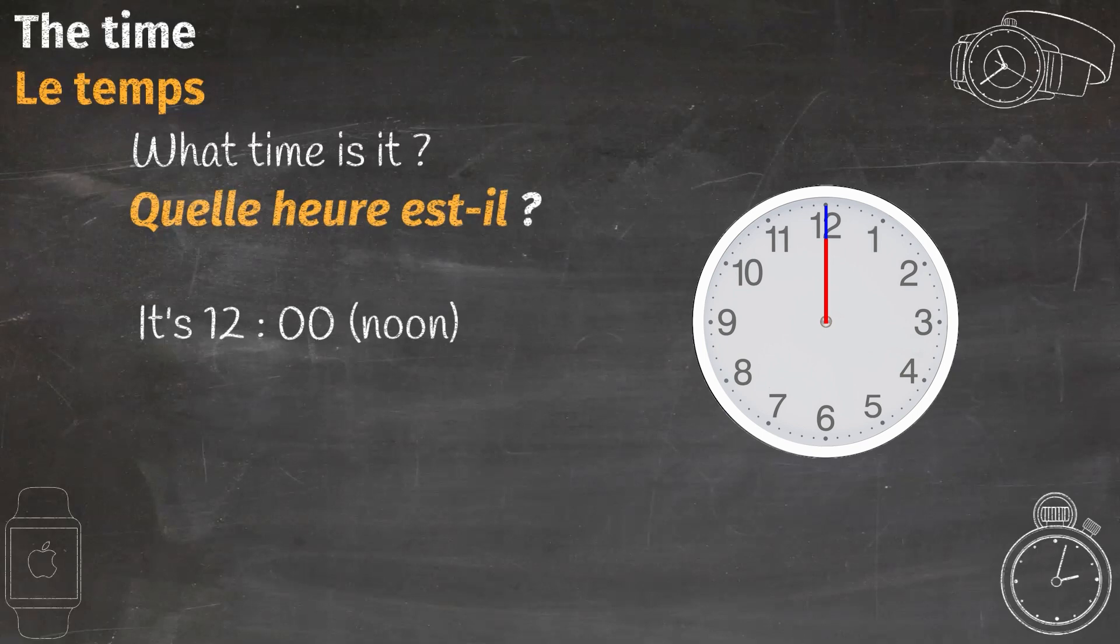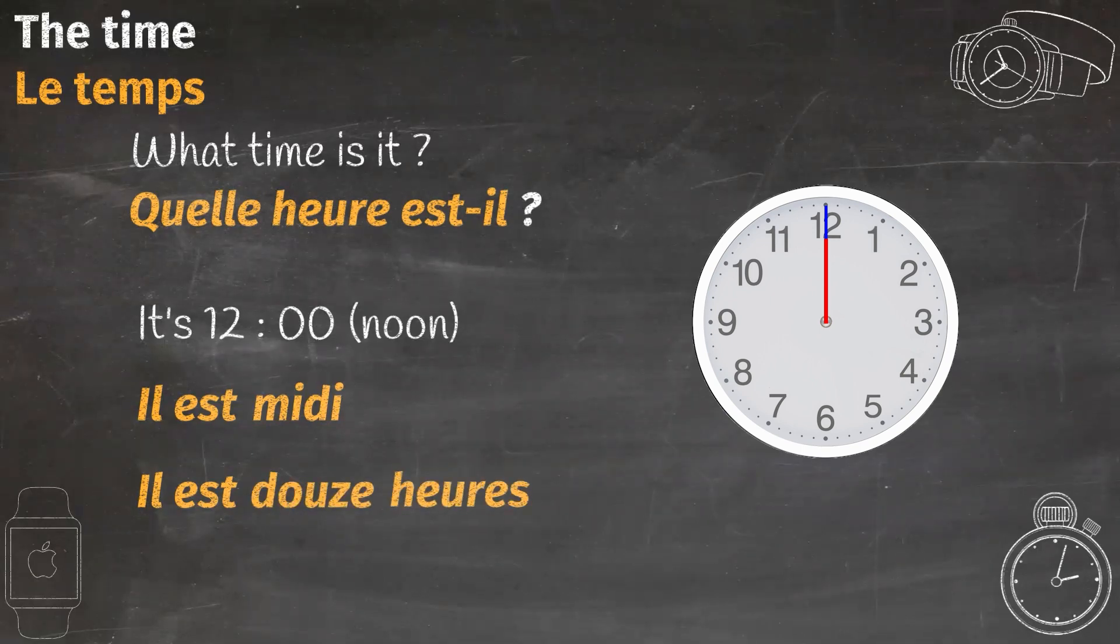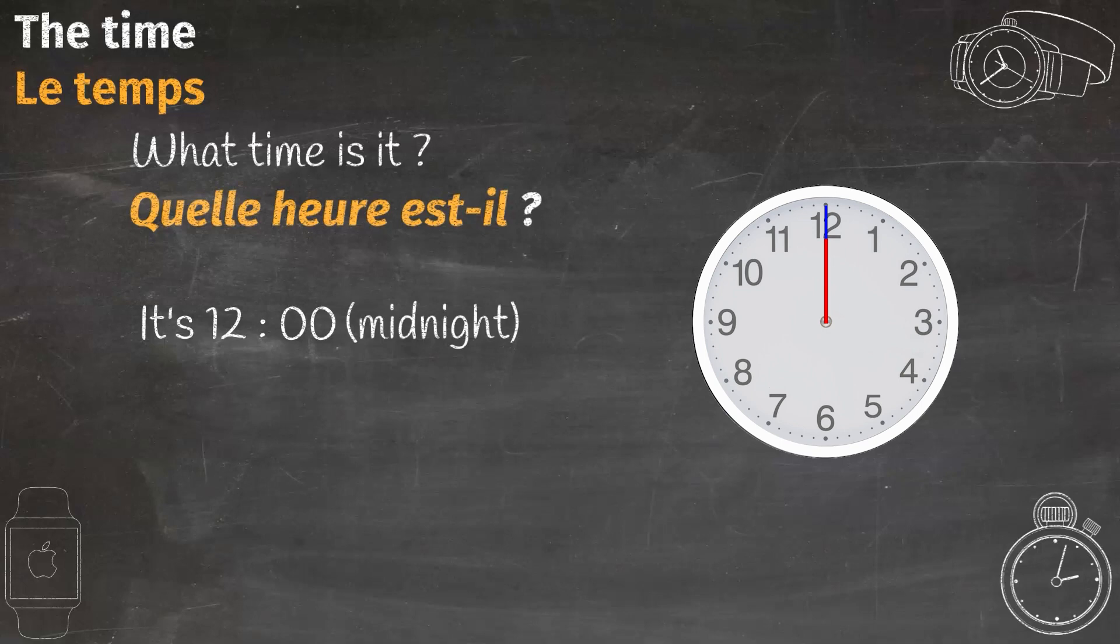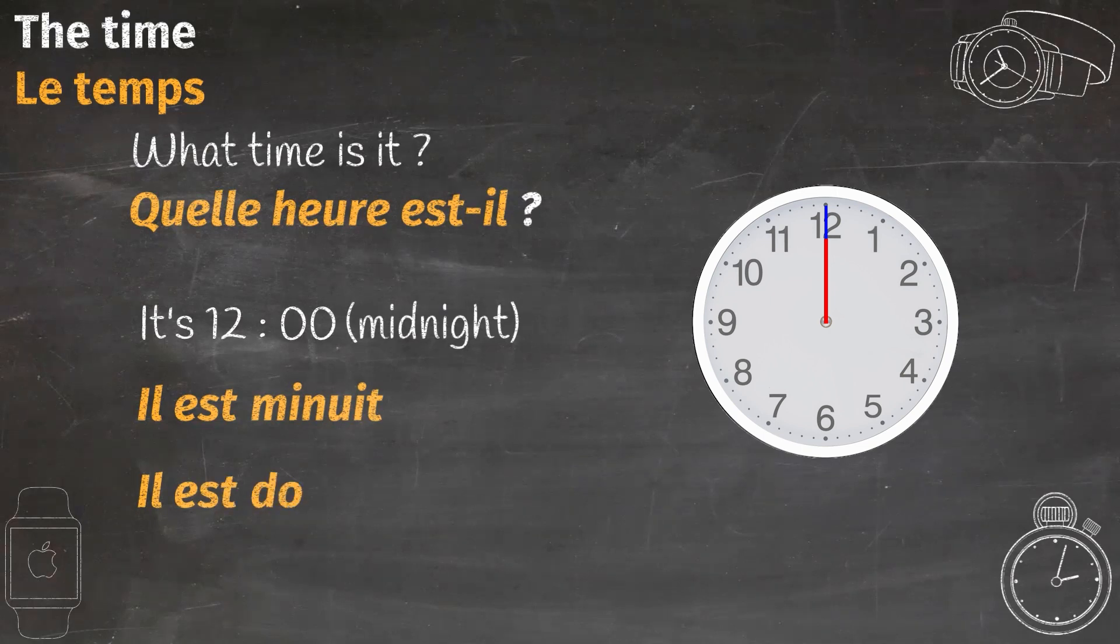It's 12, or noon. For this one we have actually two options. The first one is more common. We can say il est midi, which means it's noon. Midi means noon. Or we can also say it's 12, which is il est douze heures. But what if it's 12 midnight? We also have two options. Il est minuit, minuit means midnight. Or we can say it's 12, which is il est douze heures.